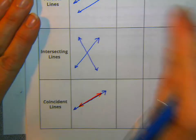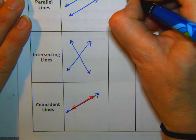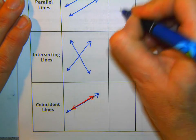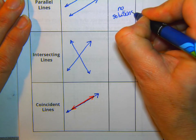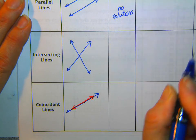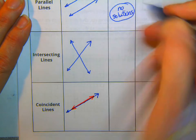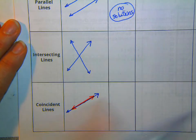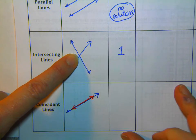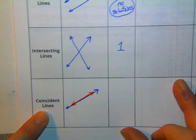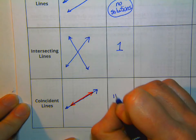And then how many solutions do parallel lines have? Zero. Or we say no solutions. That doesn't mean zero is the solution. That means there are no solutions at all. How many solutions for intersecting lines? Well, where do they touch? In one spot. So there's one solution. How many solutions do coincident lines have? An infinite number.